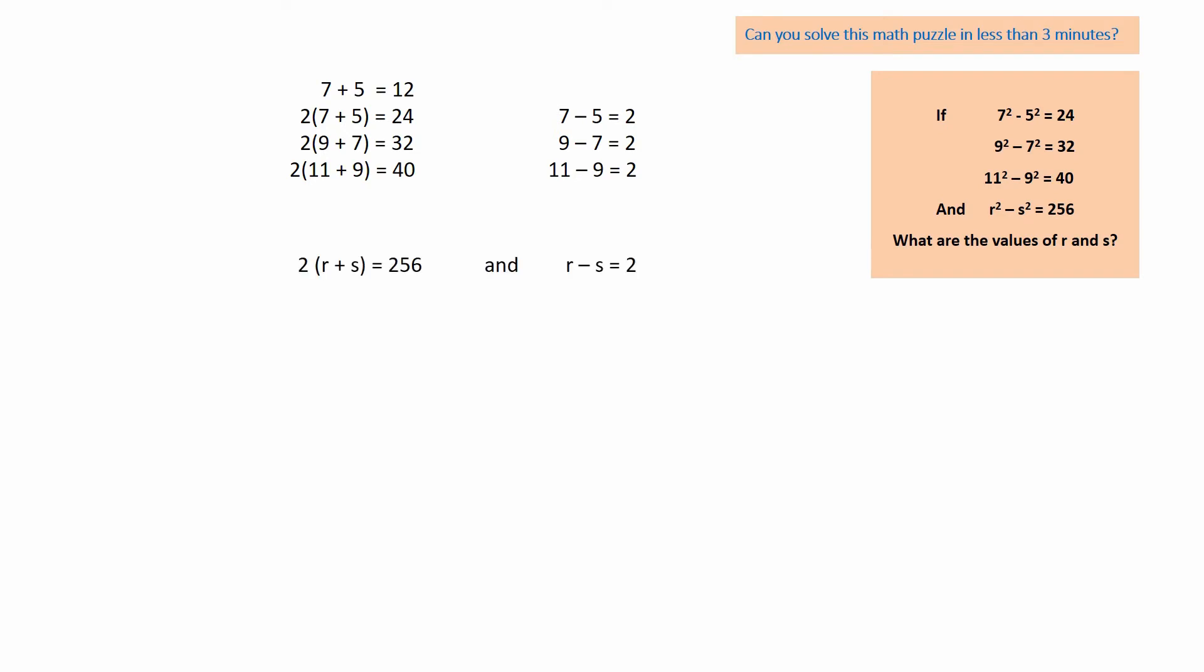Now apply the same rule to R and S. Simplify the left equation by dividing both sides by 2. Adding the two equations highlighted gives 2R equals 130, which after dividing both sides by 2 gives R equals 65.